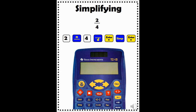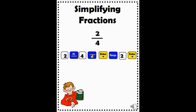If you want to simplify a fraction, you would use the SIMP button, which stands for simplify. To simplify 2 fourths, you would enter the fraction 2 fourths — 2 numerator, 4 denominator. Then press the enter button so that the fraction moves to the right side of your display. Lastly, press SIMP enter. If you are curious to know what factor the calculator used to simplify, press the FAC button, standing for factor. When I press the FAC button for this fraction, a 2 appears. This means the calculator divided both the numerator and denominator by 2 to simplify.